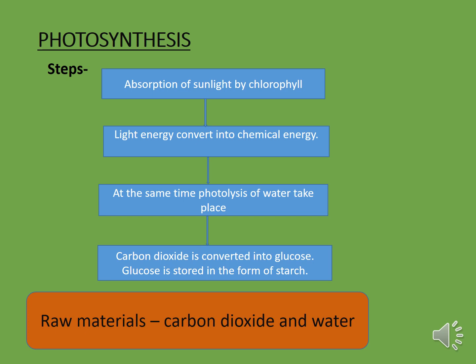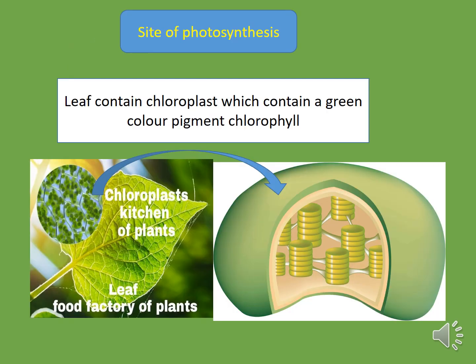After going through these steps we can understand that the raw materials used for photosynthesis are carbon dioxide and water. What is the site of photosynthesis? Photosynthesis takes place in leaves. The organelle which is responsible for photosynthesis is chloroplast. Chloroplast is known as the kitchen of the plant cell, which you have already studied in class 9. Chloroplast also contains a green color pigment called chlorophyll. Chlorophyll helps in trapping the light, so it helps in photosynthesis, and chloroplasts are present in the mesophyll cells.